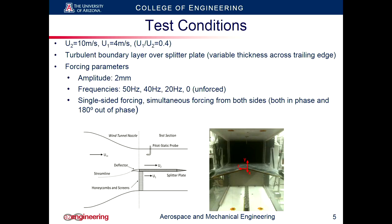The test conditions we used had the velocity ratio fixed at 0.4. It's important to note that the boundary layer over the splitter plate was turbulent, so with the splitter plate we would have inequality of boundary layer thickness due to the increased length, and therefore we would expect to see a variable thickness across the span.